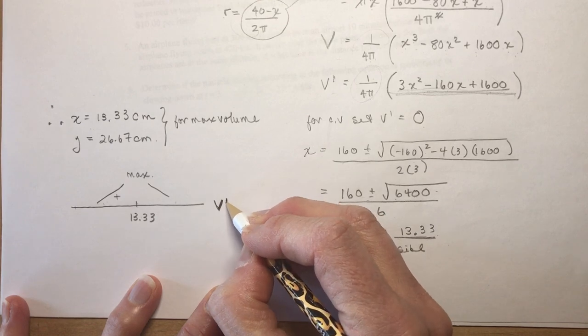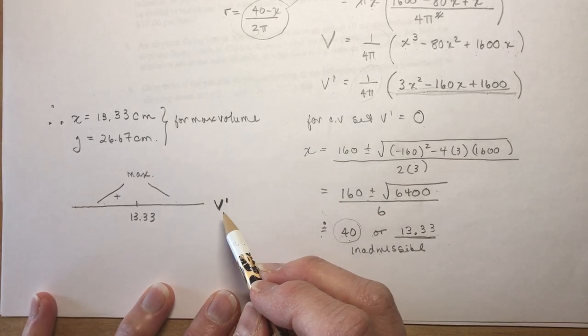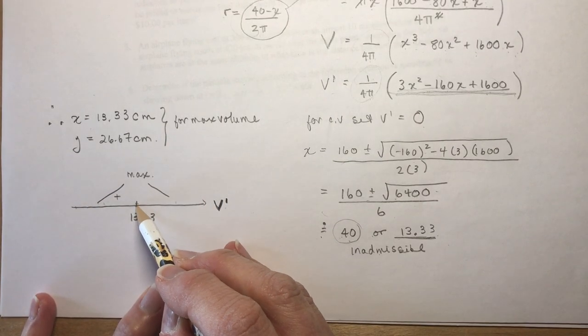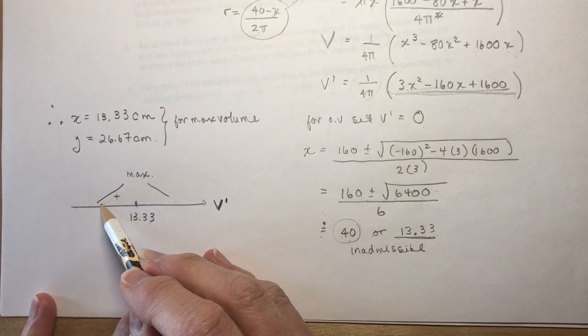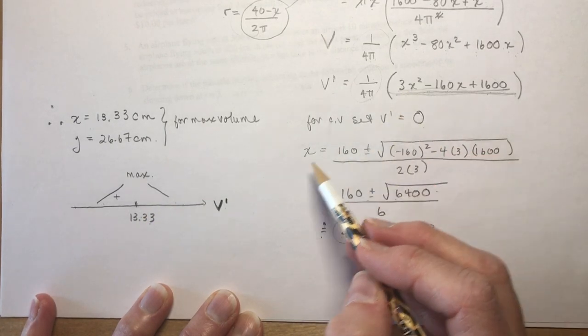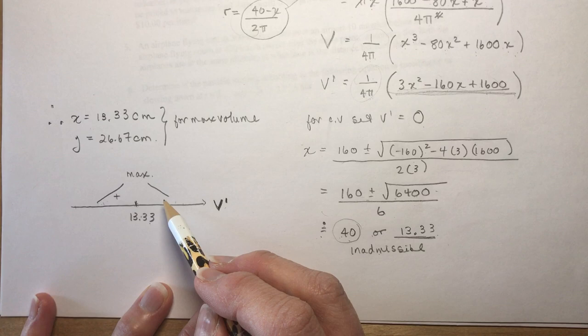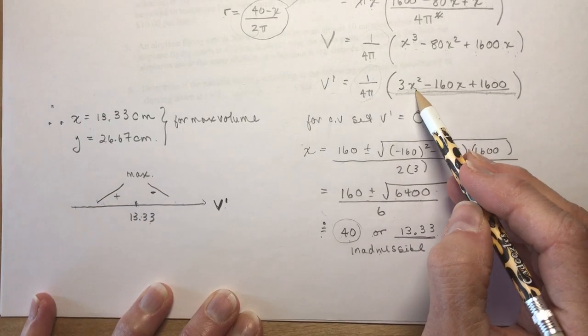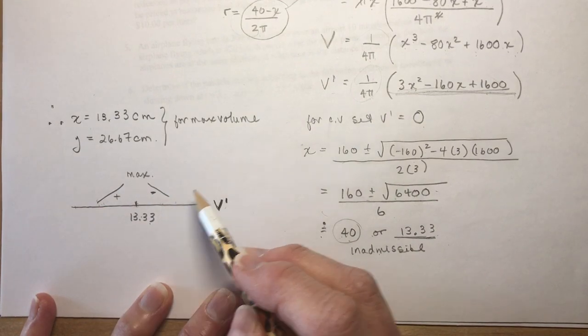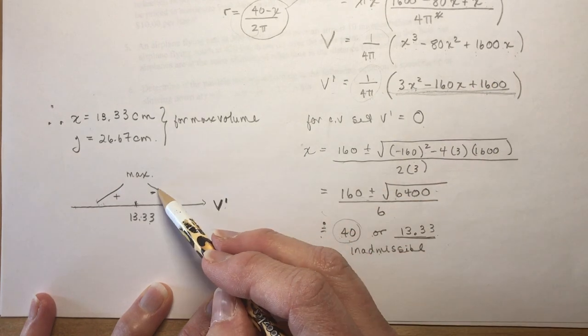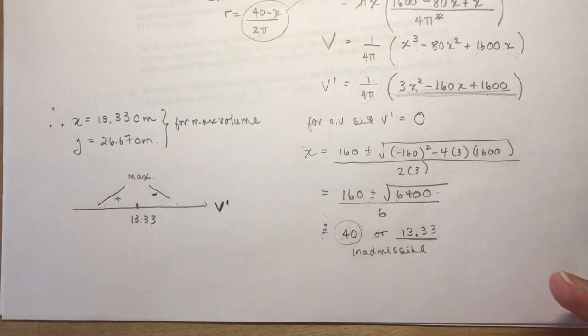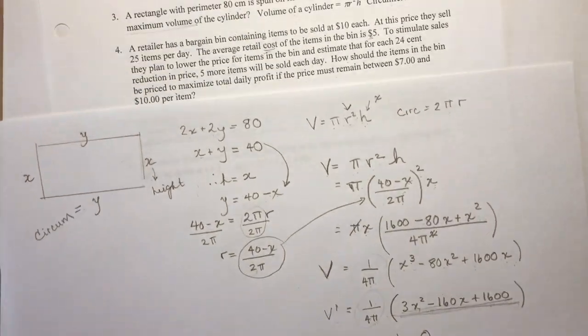And then depending on what your teacher wants as proof, or maybe not, I did a first derivative test. Maybe you haven't done that yet, maybe you have. So I said V', this is like a little number line for my V', and I put 13.33 on here. And I test a value to the left and to the right of this number into the derivative to see if I get a positive or a negative solution. To the left, if you plugged in say 10 here, you'll get a positive answer. If you plugged in 14 or 15, whatever you want to work with, into this you would get a negative answer, showing that this was a maximum value.